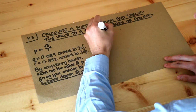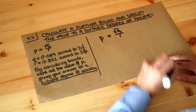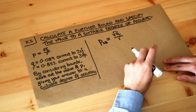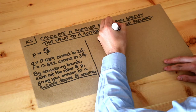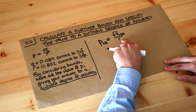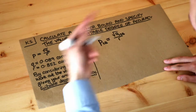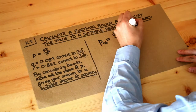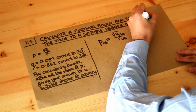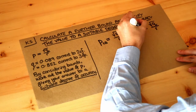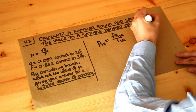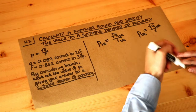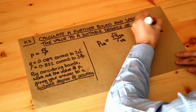Writing out the formula again: for the lower bound of P, we would start with the smallest possible value, so we use the lower bound of Q, and divide by the largest possible value, so we divide by the upper bound of R. For the upper bound of P, we start with the upper bound of Q and divide by the lower bound of R.